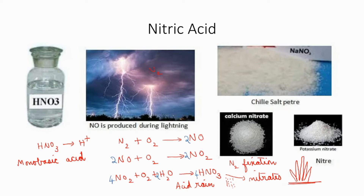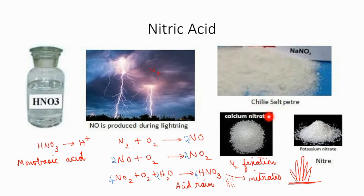Nitric acid can be seen in combined form as nitrates — sodium nitrate, calcium nitrate, potassium nitrate, etc. Sodium nitrate has a particular name: it is also known as Chile saltpeter, because this salt was found in plenty in Chile and Peru. Niter is another name for potassium nitrate. These names of sodium nitrate and potassium nitrate you should memorize, as they can appear in questions.